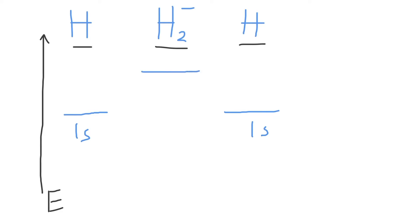We will draw these in: one is higher in energy than the atomic orbitals, and one is lower in energy. Then we will draw lines connecting the atomic orbitals to these individual molecular orbitals associated with H2 minus.